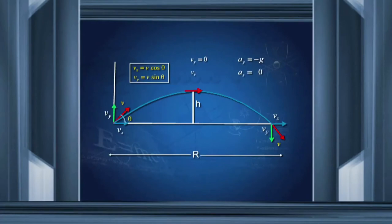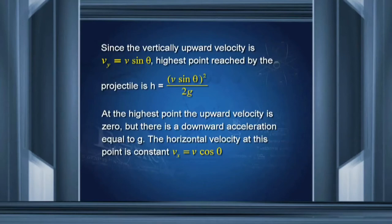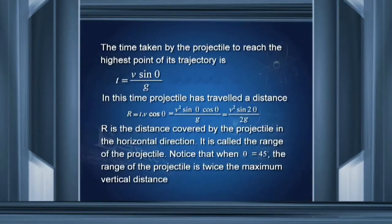The vertically upward velocity is v_y equal to v sin theta. The highest point reached is v squared sin squared theta divided by 2g. At the highest point, the upward velocity is zero but there is a downward acceleration equal to g, while the horizontal velocity remains constant. The time taken to reach the highest point is t equal to v sin theta divided by g. The range — the maximum horizontal distance — is v squared sin 2 theta divided by 2g. If theta is 45 degrees, the range is maximum.